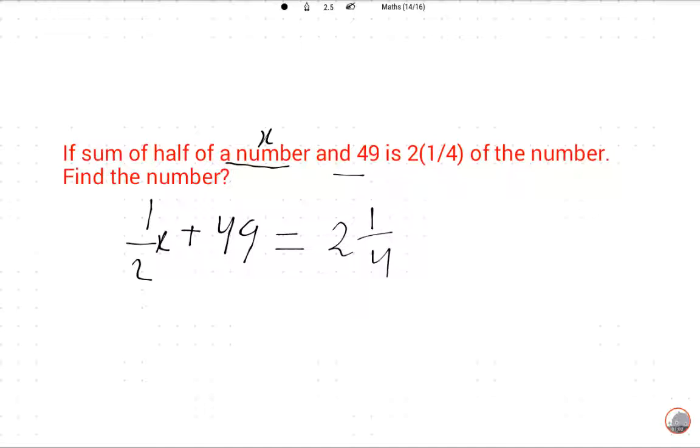Sum of half of a number and 49 is equal to 2 and 1 upon 4 of the number. So this is the corresponding equation.